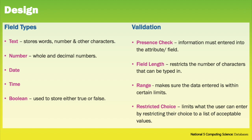Validation is used to ensure that the data within our database is more accurate. There are different types of validation checks that we can perform. Presence check is where the information must be entered into an attribute or a field — for example, when signing up to social media, you must enter your email address. Field length restricts the number of characters that could be typed in — for example, ensuring that a phone number is only ever 11 characters long. A range check makes sure the data is entered within certain limits — for example, if you're entering the rating for a film, you can only enter numbers between one and five. Restricted choice limits what the user can enter by restricting their choice to a list of acceptable values — for example, when deciding on a guidance teacher for a new pupil, you can only pick from a list of actual guidance teachers.